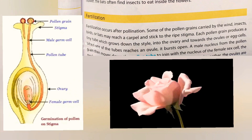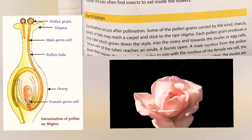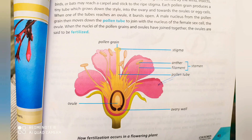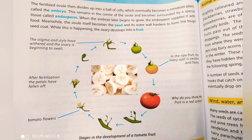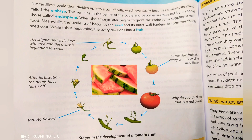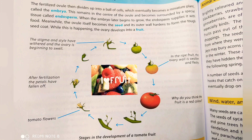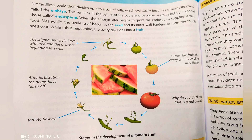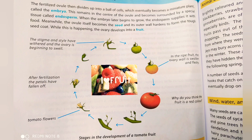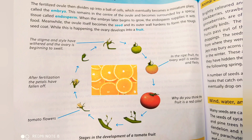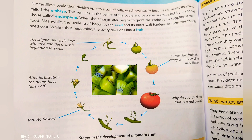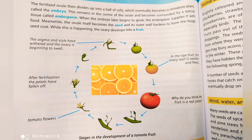When the pollen tube reaches the ovule, it releases the nucleus, which combines with the ovule — this is called fertilization. The definition to be highlighted on page 45 is: the nuclei of the pollen grain and ovule have joined together. The fertilized ovule then divides into cells and is called a miniature plant or embryo, surrounded by endosperm, a tissue that provides food to the embryo plant.